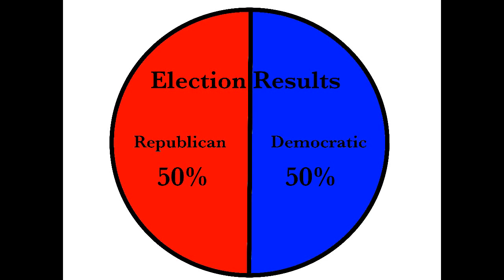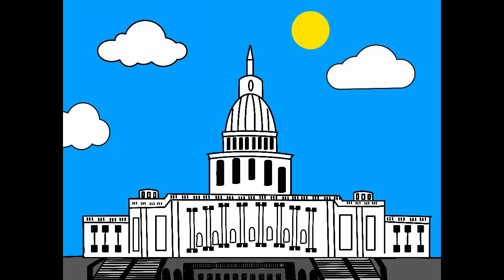When it is a tie, it's called a contingent election. When there is a tie, the decision comes up to the United States House of Representatives.